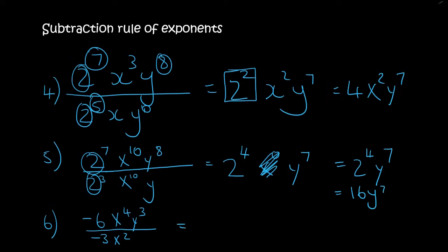For the next one, do the 6 and the 3 have exponents? No they don't, so we can divide them — type negative 6 divided by negative 3 into the calculator and you get positive 2. Then the x's subtract to give x². For the y's, there is no y at the bottom, so you just keep it as y³.